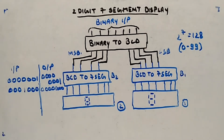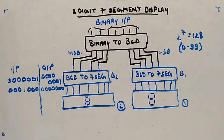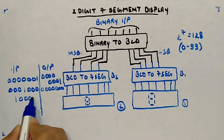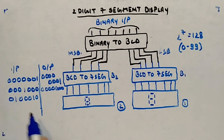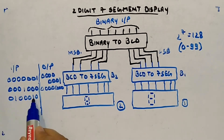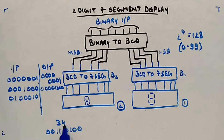Let's take a value greater than nine. Consider input 1000100 — that represents 32 plus 2, so 34. Then the output will be: MSB four bits representing tens digit as 0011 (which is 3), and LSB four bits as 0100 (which is 4). So 34 is represented.